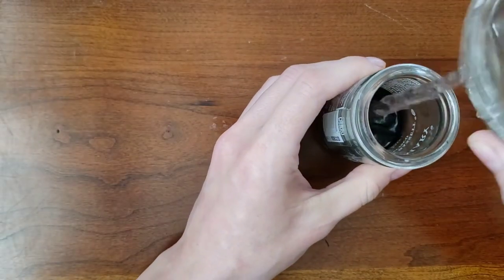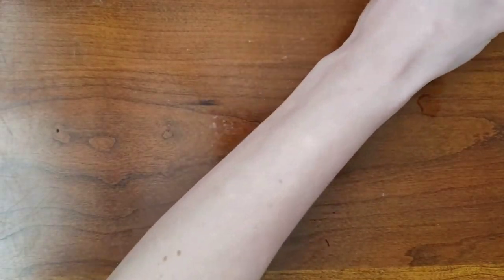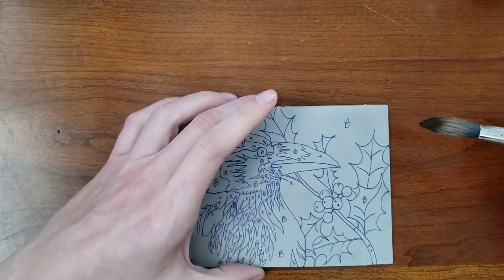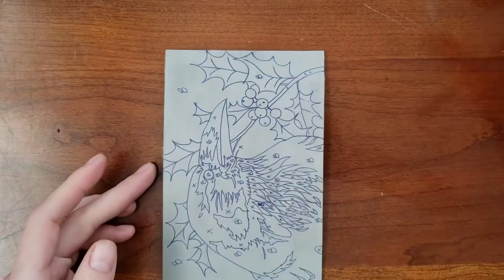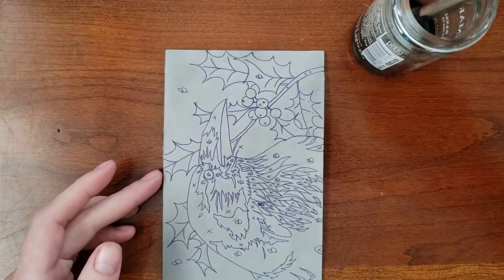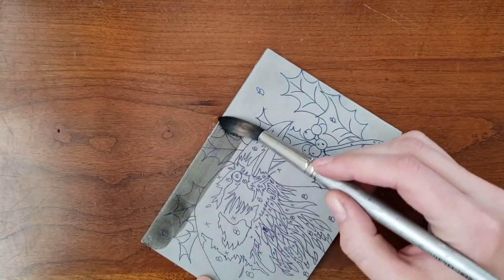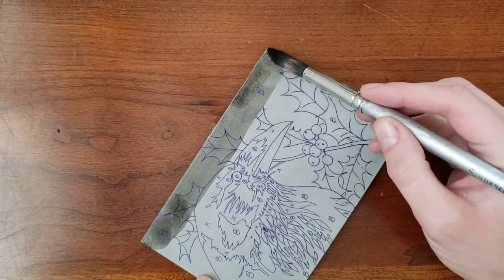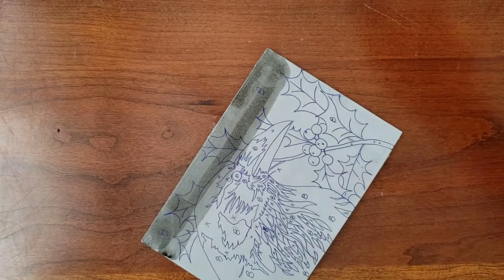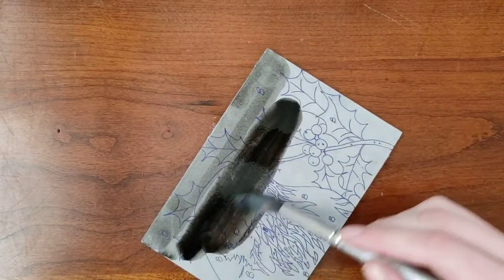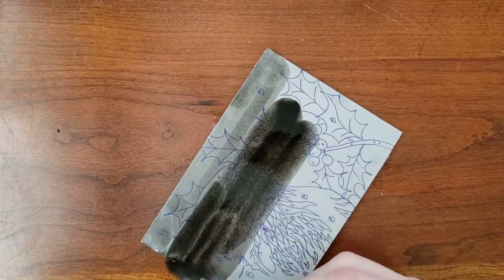Dilute your ink with water. If it's too dark, you won't be able to see the ballpoint pen underneath. Cover the entire surface of the linoleum with wash. If you were to do this with only graphite on the block, all of your marks would lift off. Because I went over everything with pen, it will stay put.